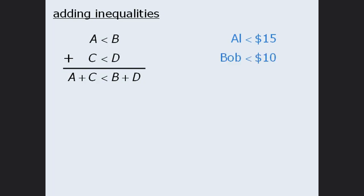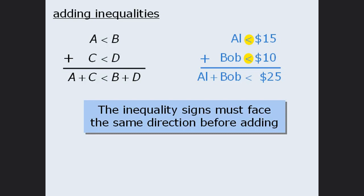The next technique to examine is adding inequalities. The underlying principle is: if a is less than b and c is less than d, then adding the two inequalities gives us a plus c is less than b plus d. This makes sense with a real-world example: if Al has less than $15 and Bob has less than $10, then their combined wealth will be less than $25. Please note that both inequality signs must be facing the same direction — this is a necessary requirement before adding any inequalities.